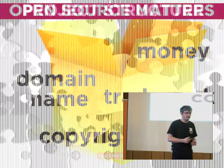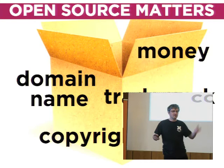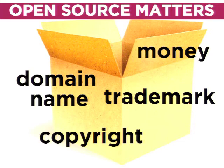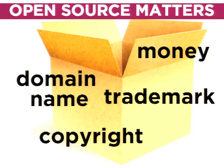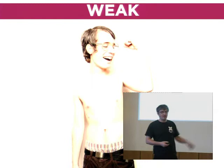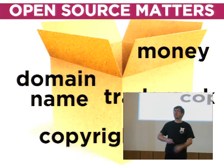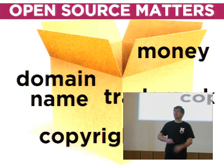So what is Joomla's project structure? We do have a non-profit association called Open Source Matters, which exists to look after the domain name, the money, the trademark, copyright, and any legal stuff. It is designed to be weak — Open Source Matters cannot say what features the next version of Joomla will have. They're only responsible for the domain name, money, trademark, and copyright. It's made up of elected community members who stand for one or two years. They're not running the project.